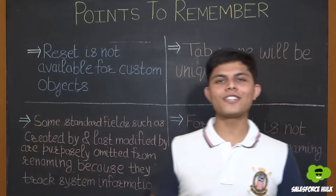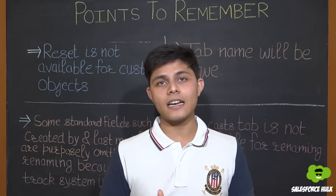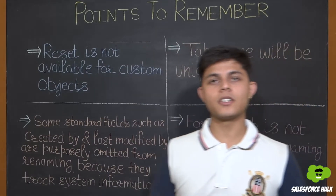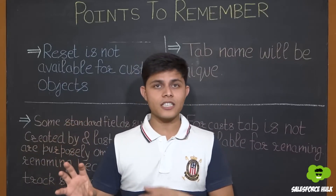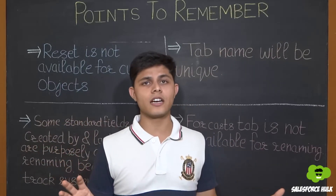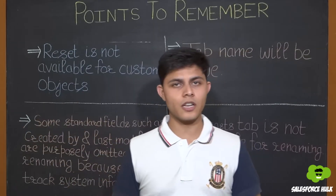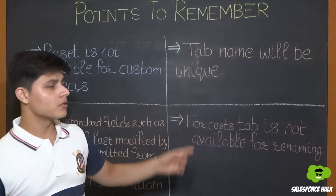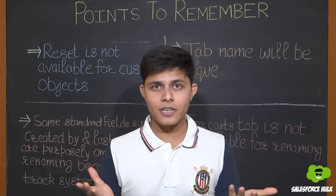Now let's look at what you need to consider while renaming tab names and field labels. First, reset is not available for custom objects — you cannot rename custom object tabs using this functionality, though you can do that by editing the custom object and changing its plural label. Second, tab names must be unique — no two tabs can have the same name, as that would cause ambiguity.